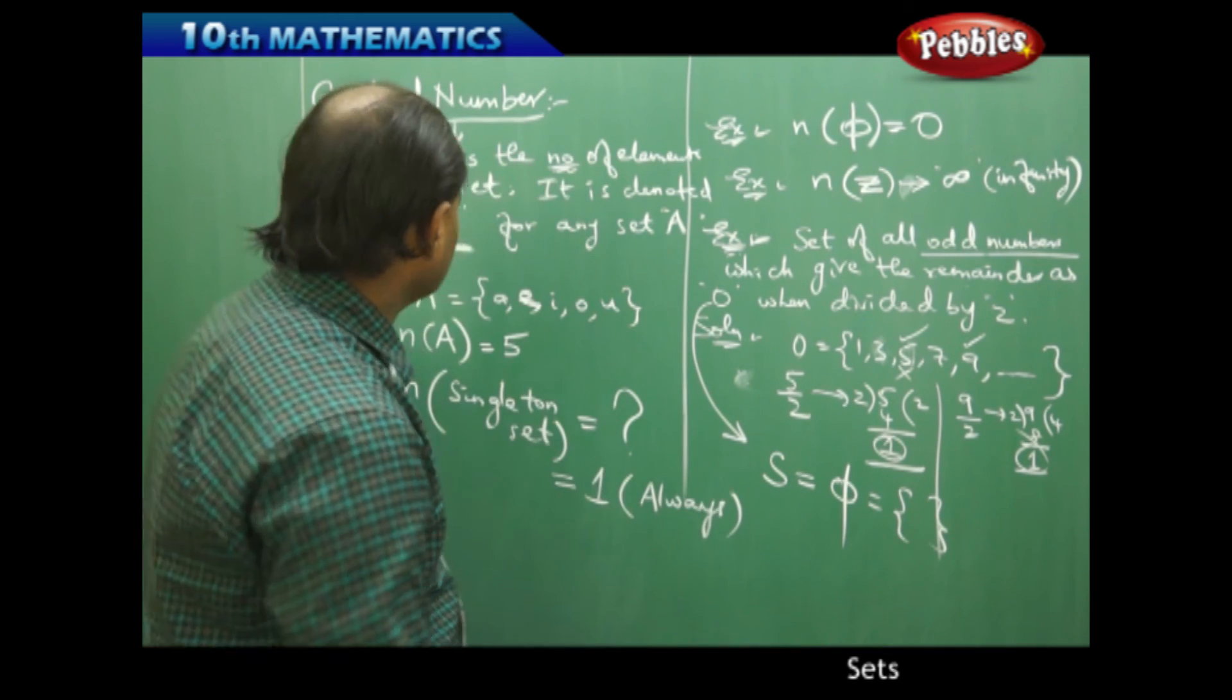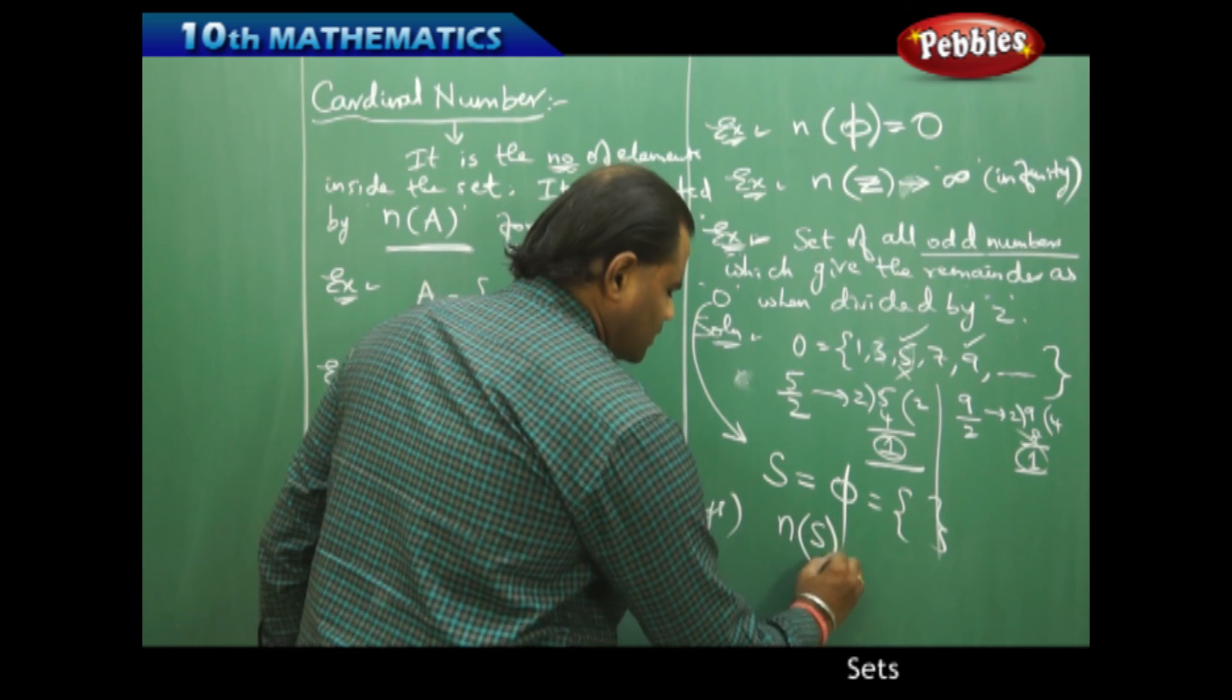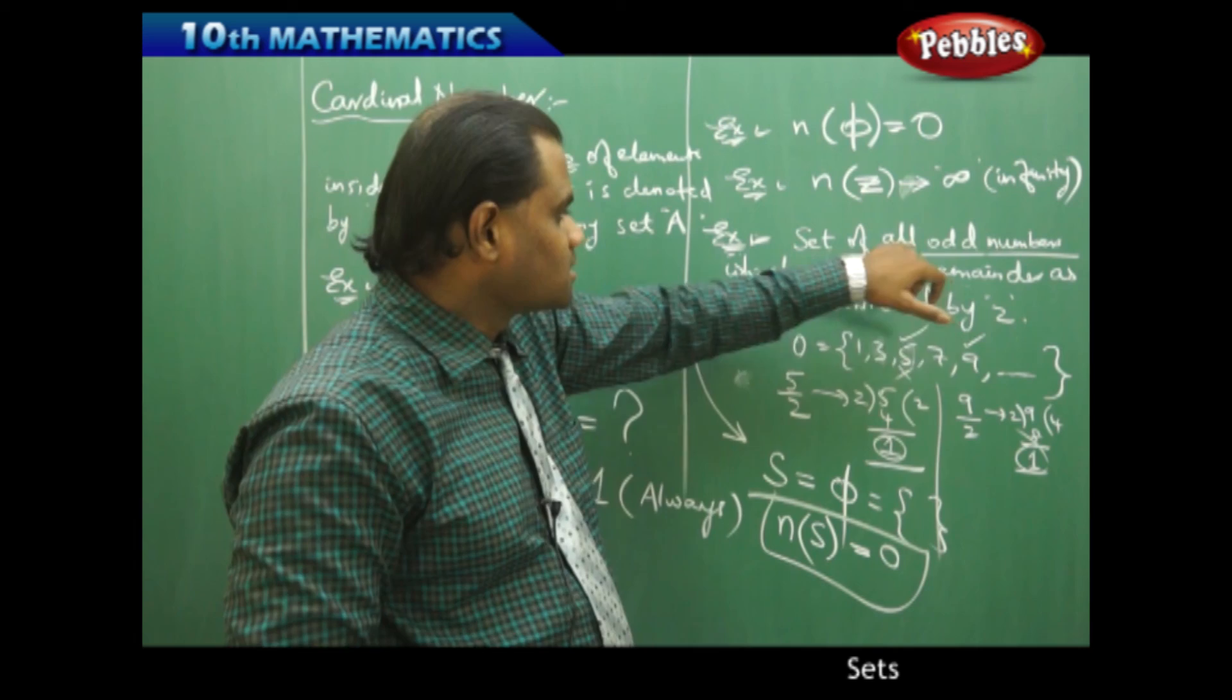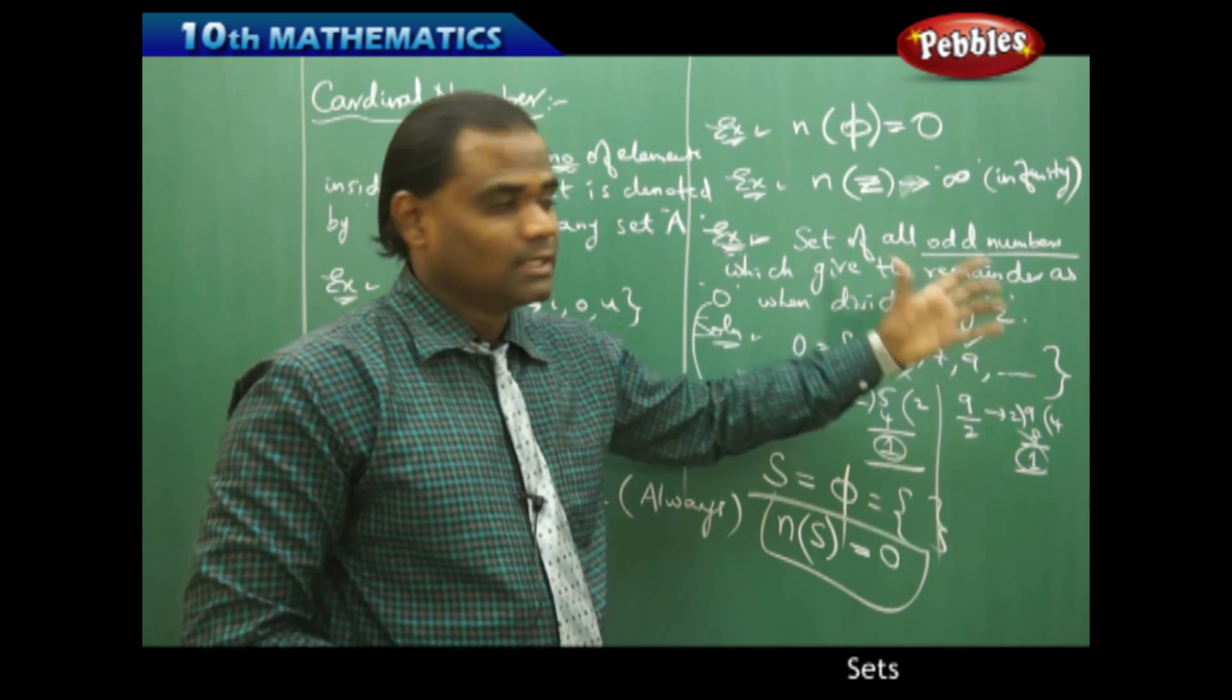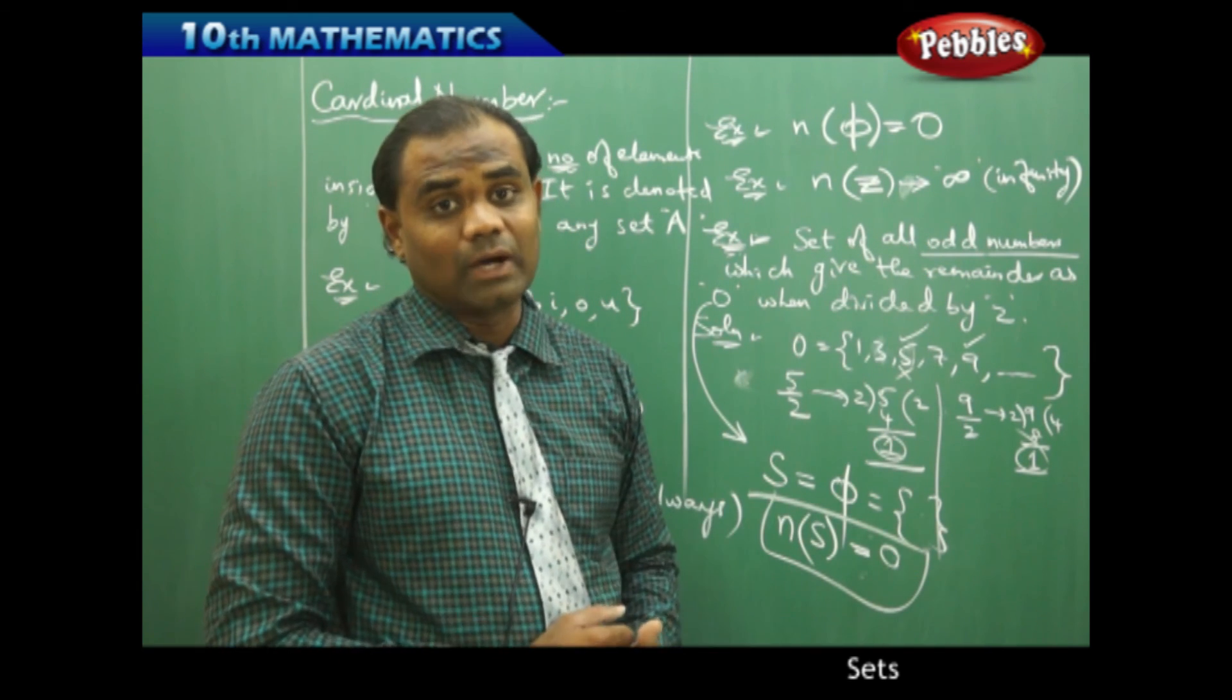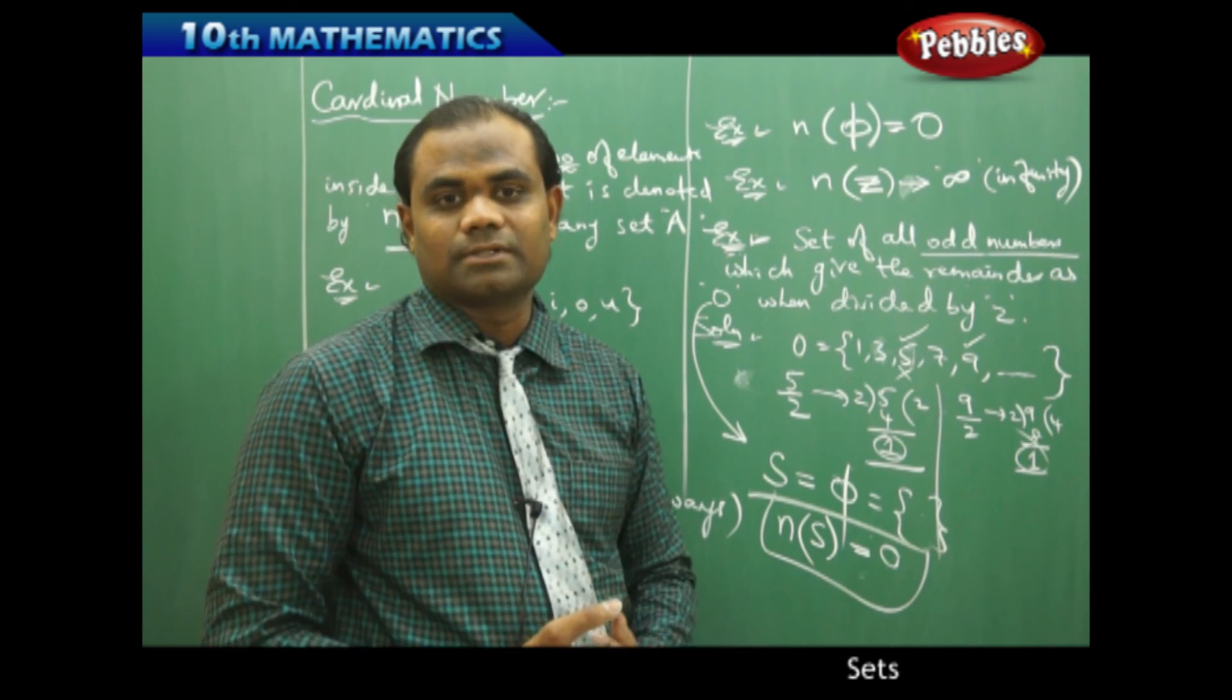The null set is again identified as having cardinal number 0. Therefore, when I wanted to find the number of elements in the set of odd numbers which give remainder 0 when divided by 2, it indirectly gives me a null set, thus the cardinal number of this set is 0. This is how I identify by generating the set and then identifying the number of elements.